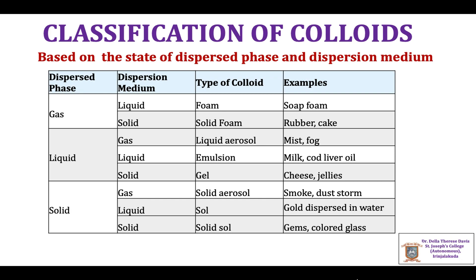When both the dispersed phase and the dispersion medium are solids, it is called a solid sol. Examples include precious gems and colored glass. These are the different types of colloidal classification based on the state of the dispersed phase and dispersion medium.